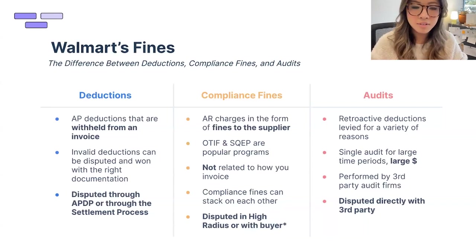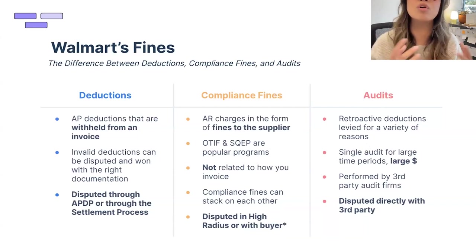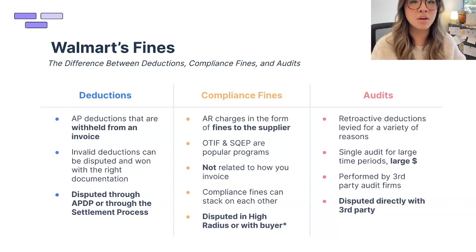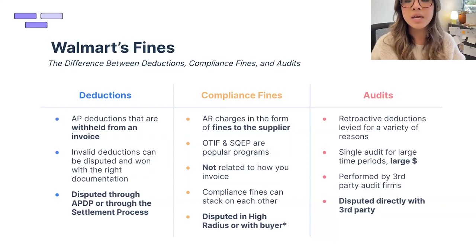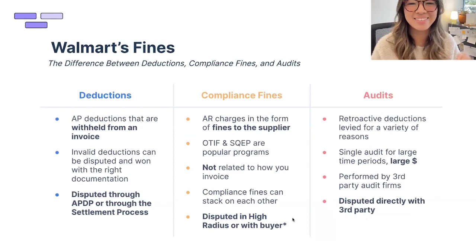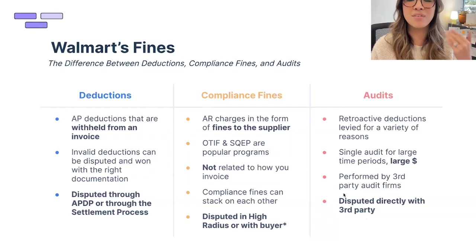The third bucket is audits — retroactive deductions covering a large time period, usually a quarter, a year, or two years, resulting in large-dollar assessments. For example, an excessive defectives audit for Q1 2023 could come across as a six-figure amount. These are performed by third-party audit firms like PRGX, Apex Analytics, and Connelly, and you dispute directly with that third party. We have content on all of this on Supplier Wiki.